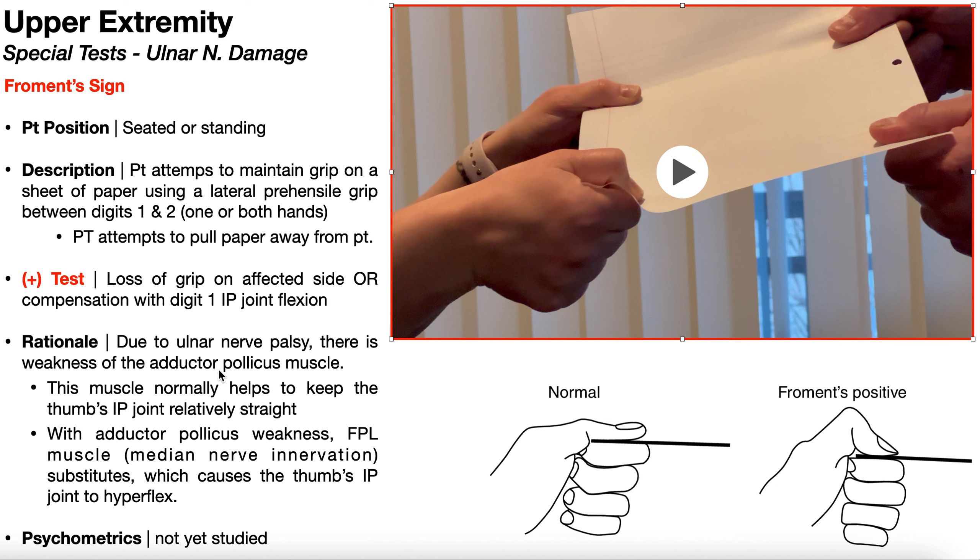So when that happens, there's another muscle that comes to substitute or compensate. And it is not innervated by the ulnar nerve, it's innervated by the median nerve. And it's this FPL flexor pollicis longus. This muscle substitutes, which actually causes the thumb's interphalangeal joint to hyperflex. And so what you see here in Froment's sign is a mismatch in strength between the two muscles, flexor pollicis longus and adductor pollicis. When adductor pollicis is weak, you have too much action by flexor pollicis longus. And so you get flexion of the thumb.